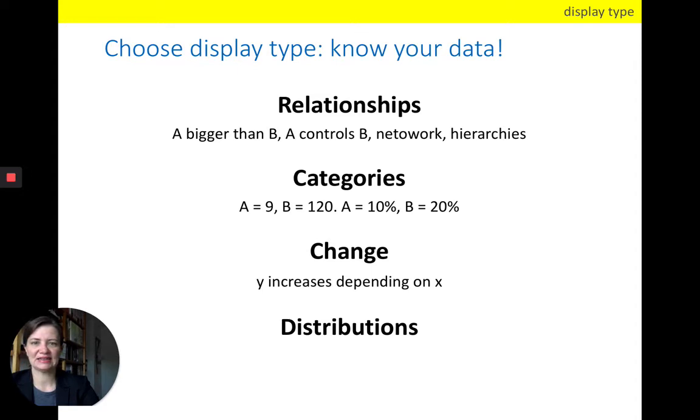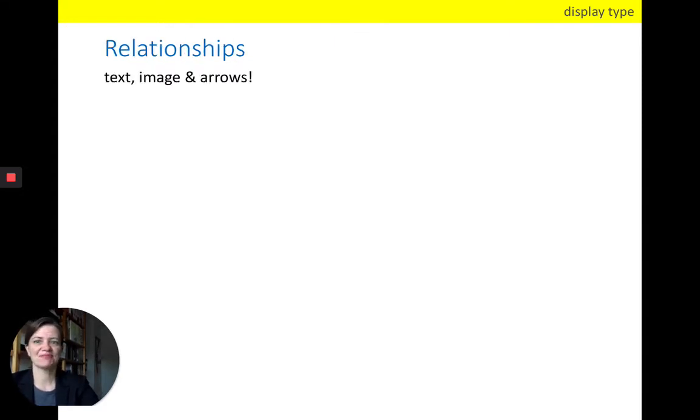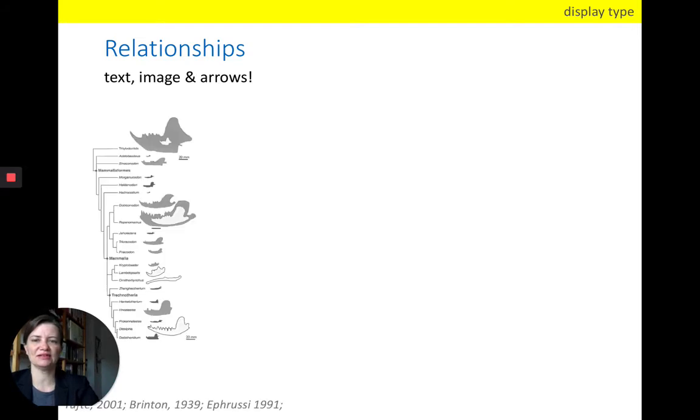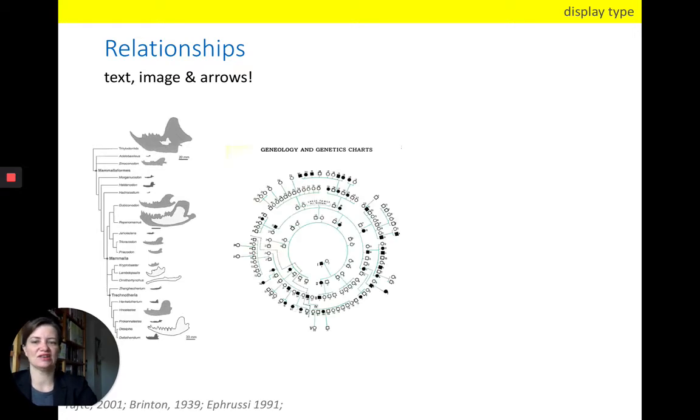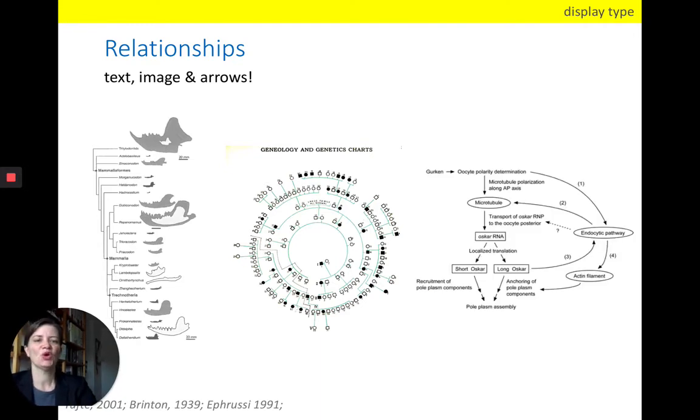So let's start with relationships, which is the easiest of them. All you need to do for visualizing relationships is to apply text and maybe images and arrows. So that's all you need, and we see this very often for example in phylogenetic diagrams, in genealogy charts. So in medicine where you may track a disease over several generations of a family, or in kind of hierarchical network diagrams. In this case from a biology example, but obviously also underground maps are relationship diagrams.